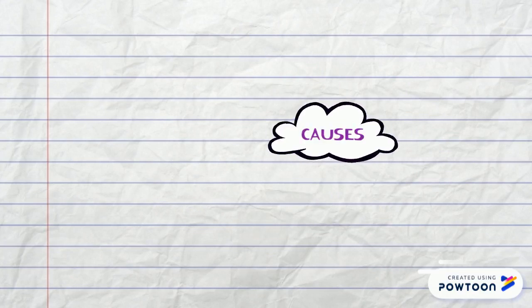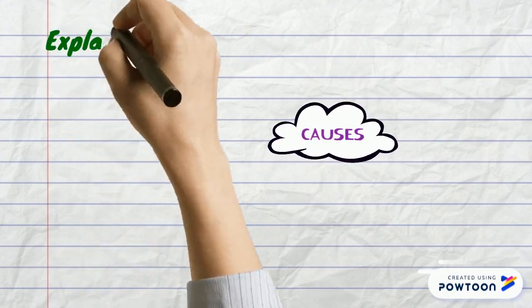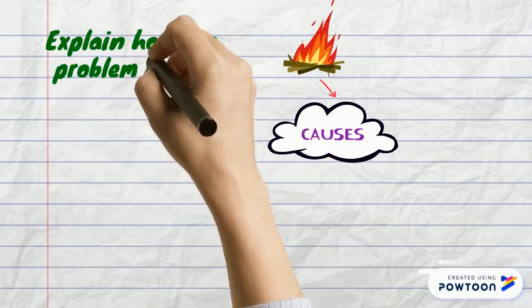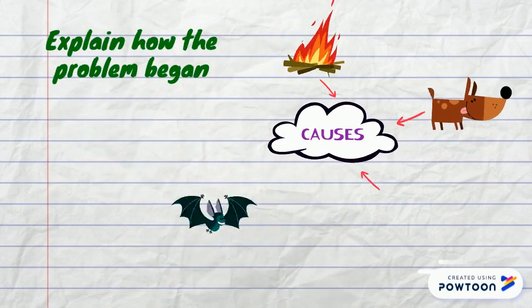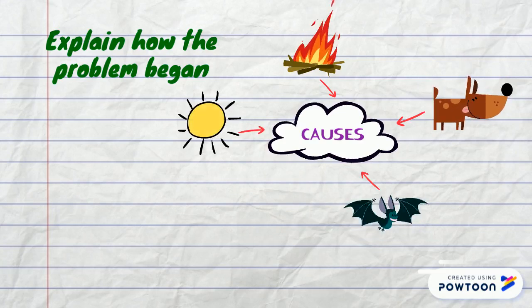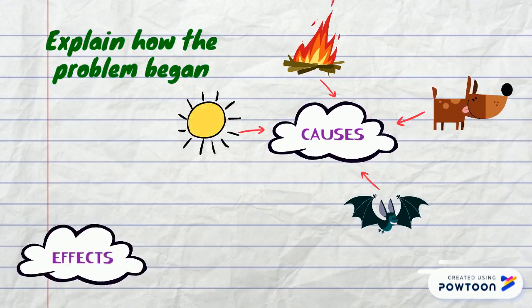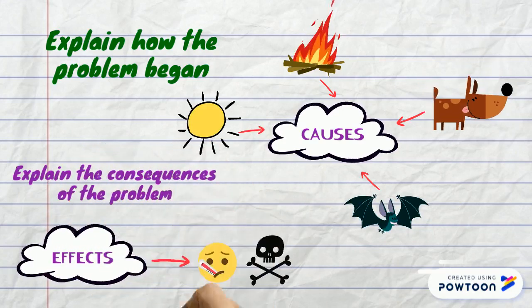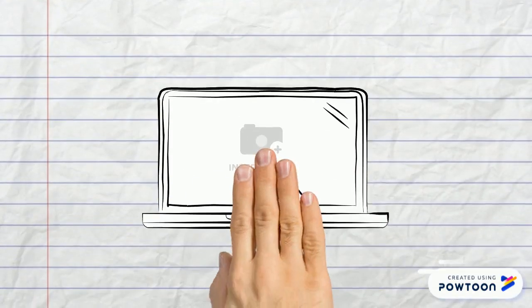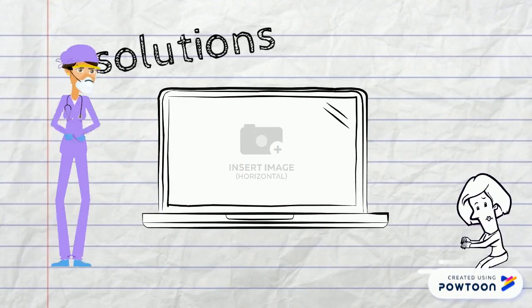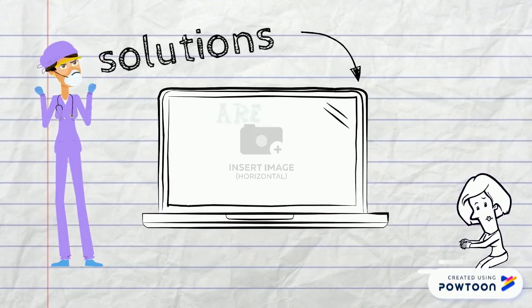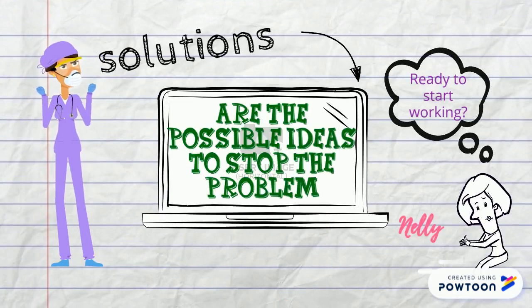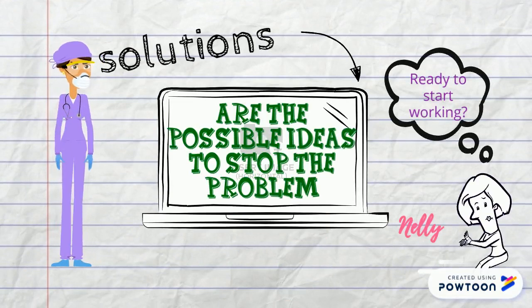We are going to explain each one of the elements. Causes explain how the problem began — it could be through natural resources. Effects explain the consequences of the problem, for example, dying people. And finally, we have solutions. Solutions are the possible ideas to stop the problem.